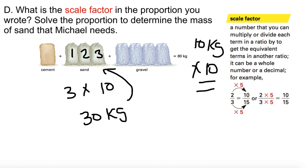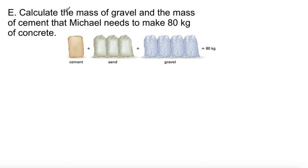Finally, finally, last but not least, calculate the mass of gravel and the mass of cement that Michael needs to make 80 kilograms of concrete. So 80 kilograms of concrete is right here. How many was the mass of gravel and the mass of cement? So gravel is four. Alright. Four. So there's four. And we already said that every bag is 10 kilograms. So four bags of gravel for 40 kilograms.